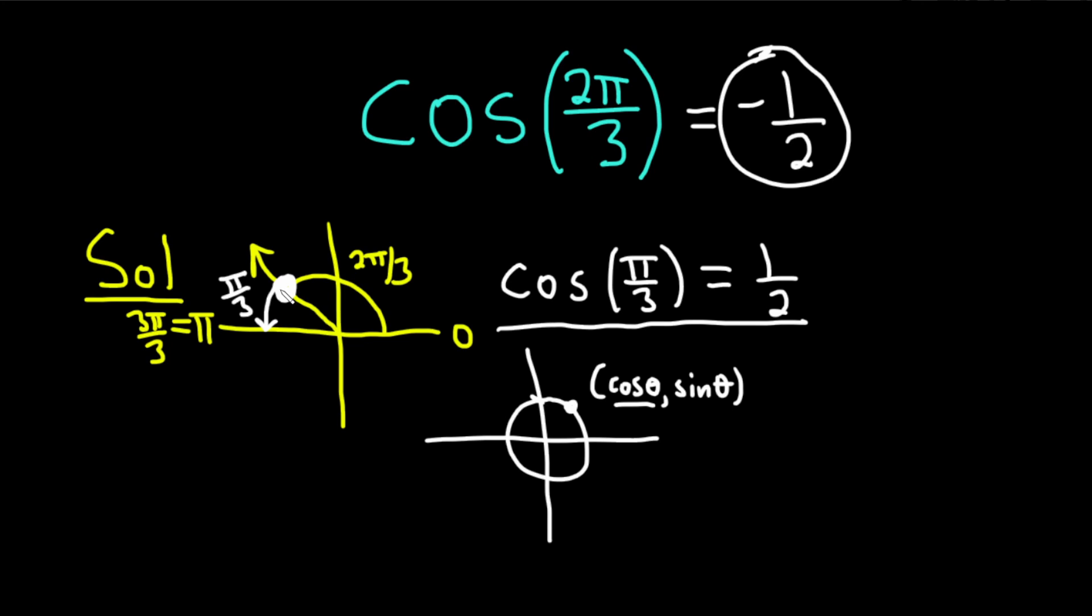Like in this case, it was in quadrant 2. So the x coordinate was negative. Therefore, it should be negative 1 half. I hope this video has been helpful. Good luck.